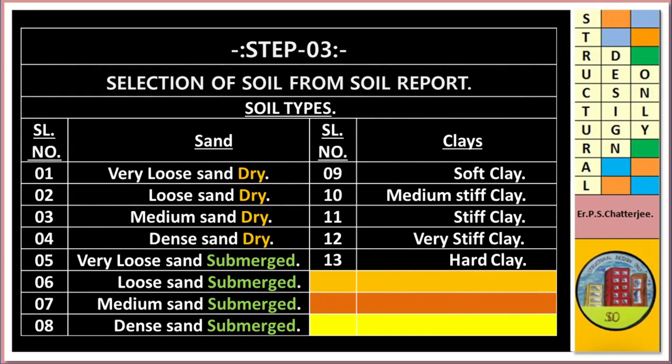Step three: selection of soil type from soil report. Soil types include: loose and dry, loose and dry medium sand, dry dense and dry, very loose and submerged, loose and submerged, medium sand submerged, dense and submerged. Among clay types: soft clay, medium stiff clay, stiff clay, very stiff clay, and hard clay.